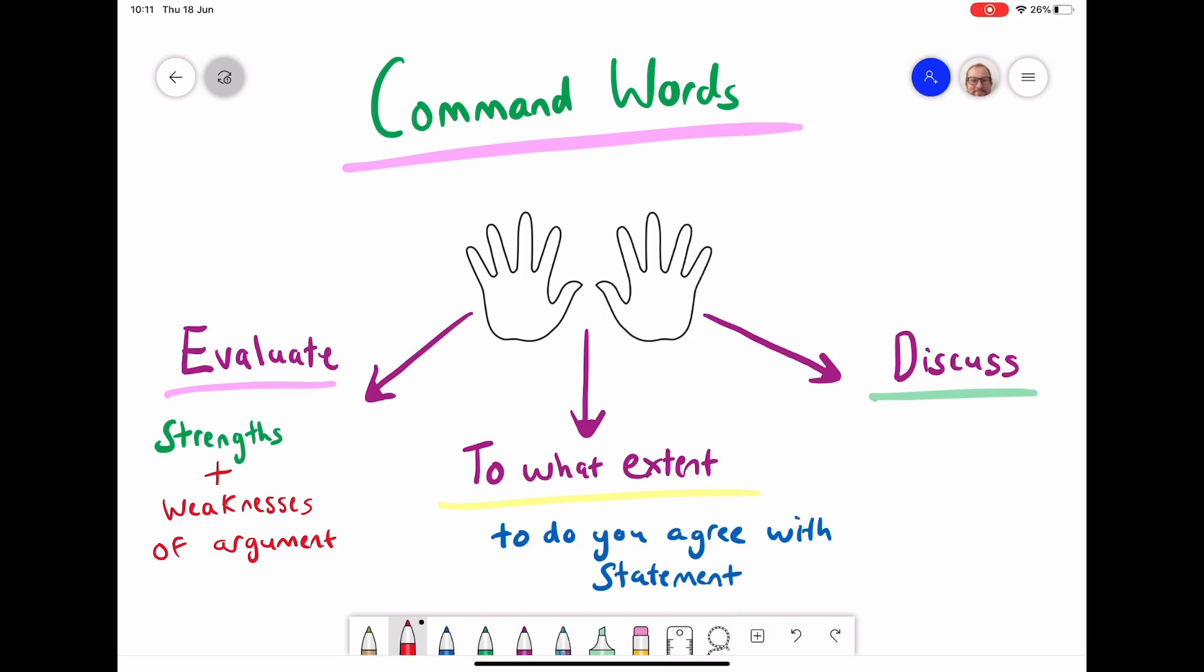The last word is discuss. Again, it's very similar to the other ones. You're having to look at both sides of an argument, usually from the side of being for or against it. And the reason why I've put these hands in the middle is because with all of these type of questions, I feel like you can use the kind of hand method.